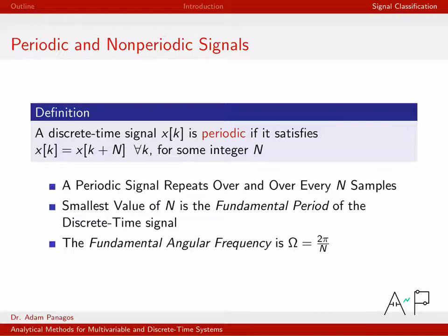A discrete time signal x of k, so again, we're working with discrete time signals here, is periodic if it satisfies this equality right here for all time k. So it is a periodic signal if x at time k is equal to the signal x at time k plus n for some integer n, and this equality has to hold no matter what value that we put in for k.